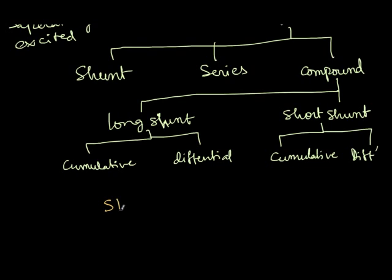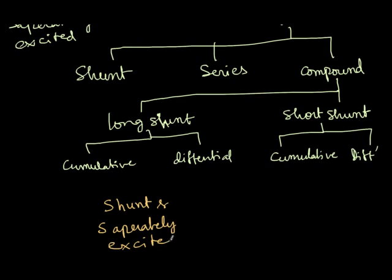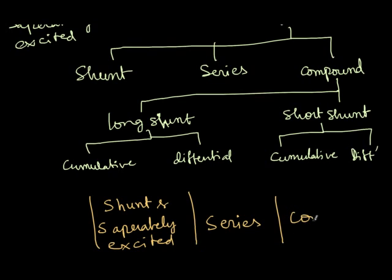I simplify it into mainly three broad categories: shunt and separately excited as one category, next the series DC motor, and finally the compound DC motor. Under compound, we will discuss both cumulative and differential, as well as long and short shunt types.